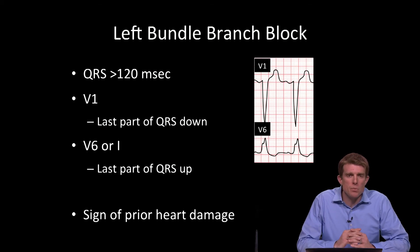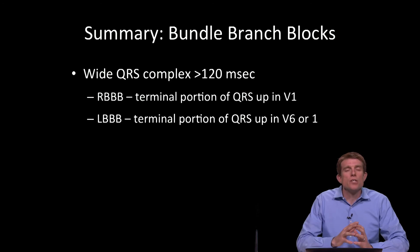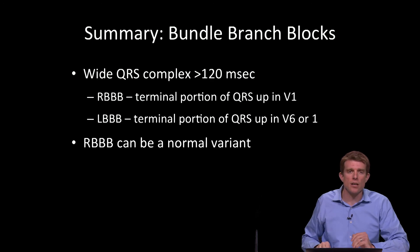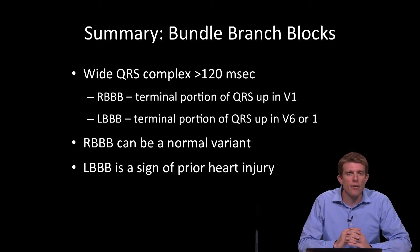A left bundle branch block is different from a right bundle branch block in that it is typically not considered a normal variant, and it's considered a sign of prior heart damage. In summary: bundle branch blocks have a wide QRS complex greater than 120 milliseconds. The terminal portion of the QRS being up in V1 tells us it's a right bundle branch block. The terminal portion being up in V6 or lead 1 tells us it's a left bundle branch block. A right bundle branch block could be normal, but a left bundle branch block is a sign of prior heart injury.